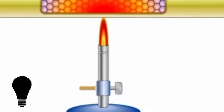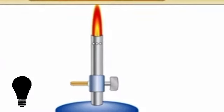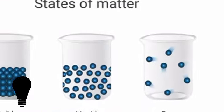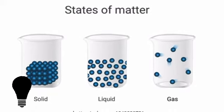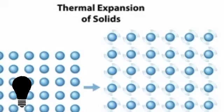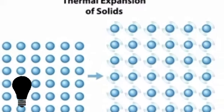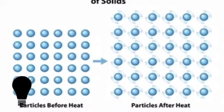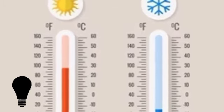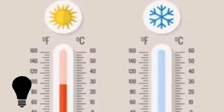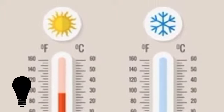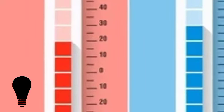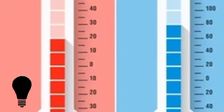When a substance is heated up, its particles move more and it takes up a larger volume. This is known as thermal expansion. Conversely, a drop in temperature causes it to contract again. The mercury level inside a thermometer, for example, rises and falls as the mercury's volume changes with the ambient temperature.